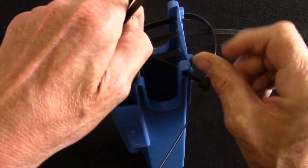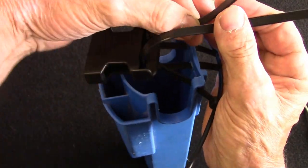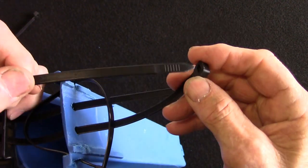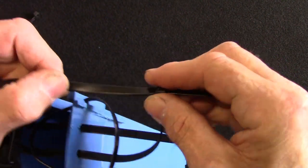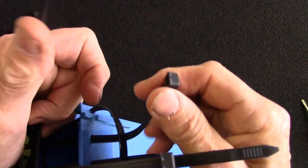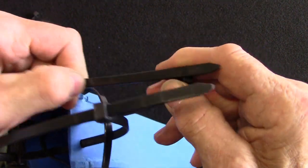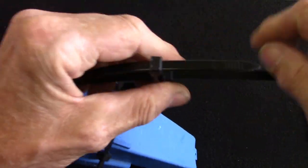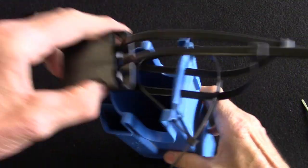So all you do then is just bring it over, then connect the zip ties like this, this one, and just put it just so it's connected. Leave it loose, and that portion is done. We'll move on to the next one.